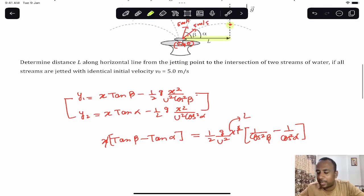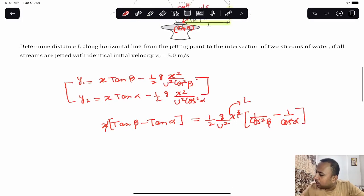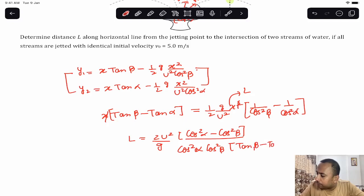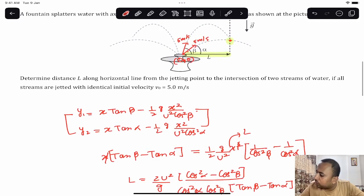From here we can say the value of L will be: 2u squared by g, and from here will come cos squared alpha minus cos squared beta divided by cos squared alpha times cos squared beta, and at the bottom will come tan beta minus tan alpha.